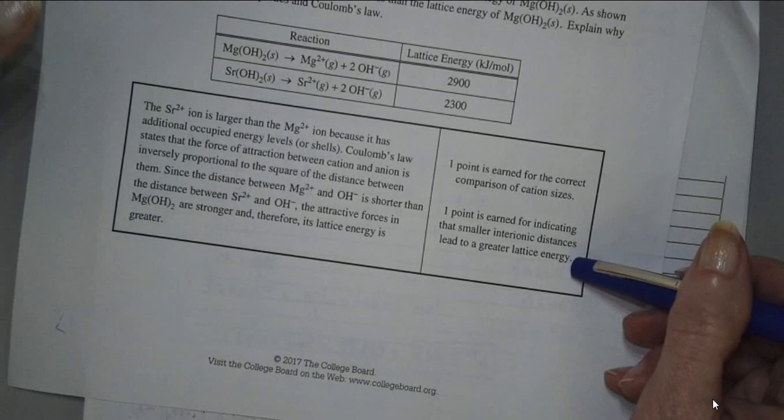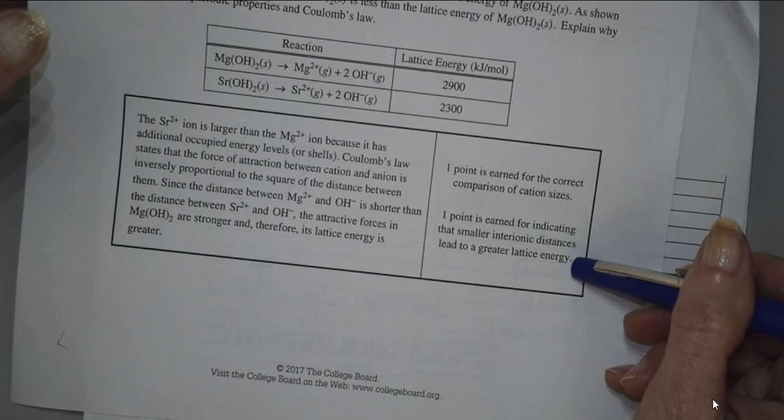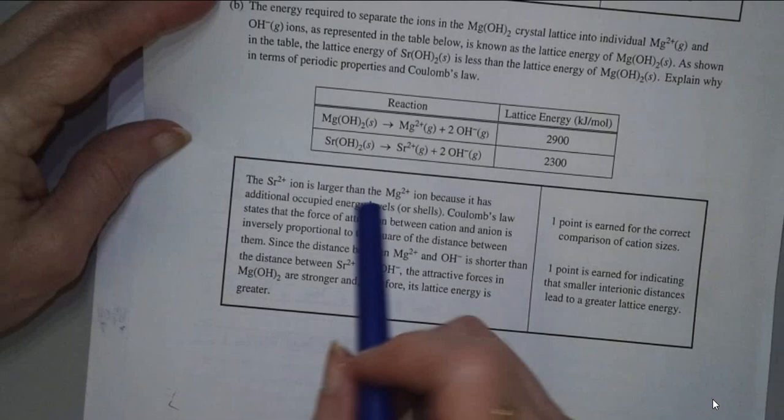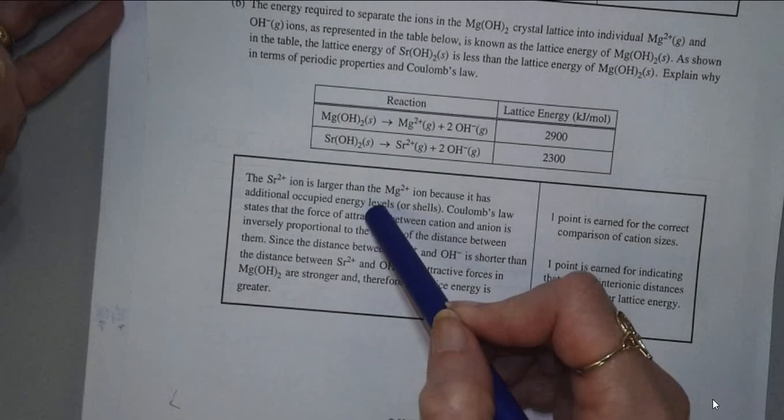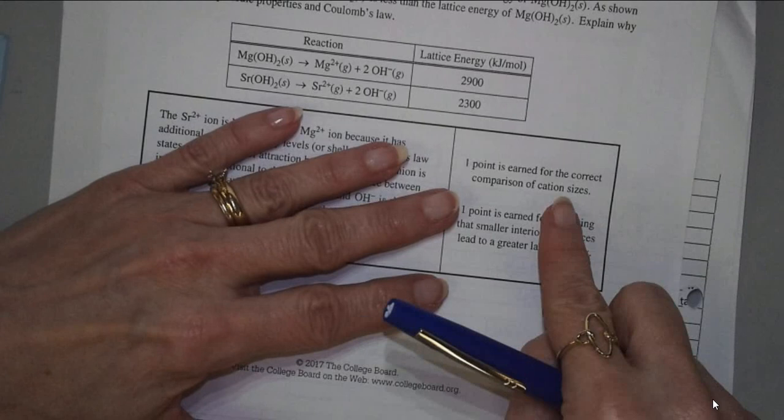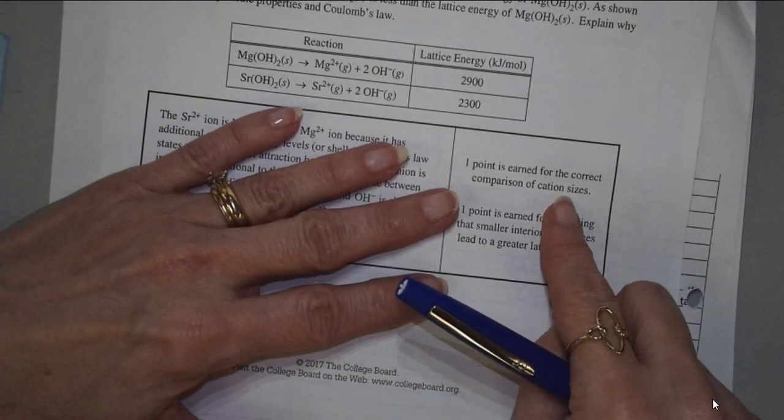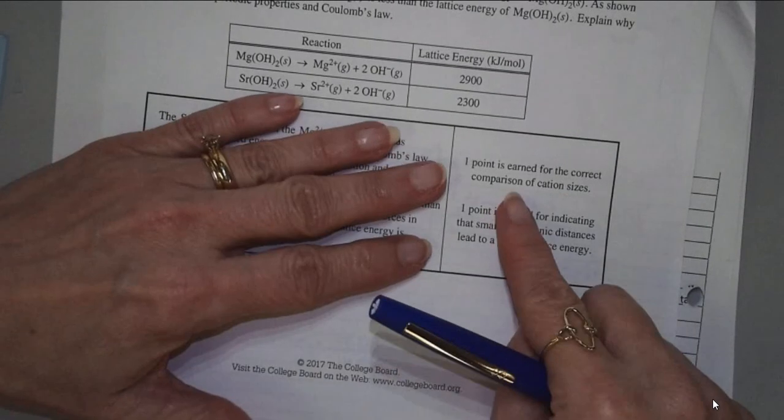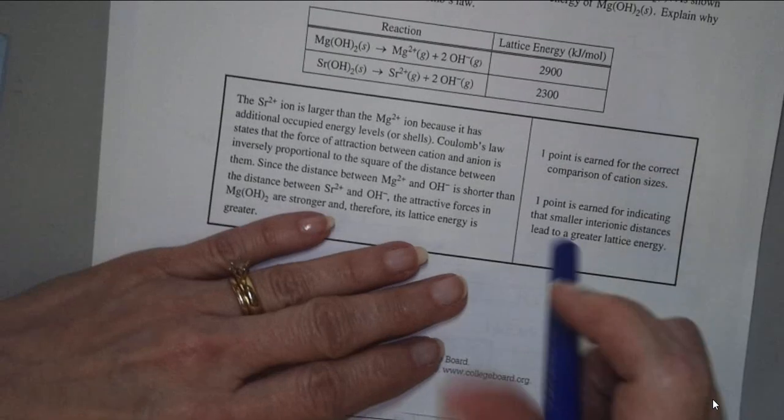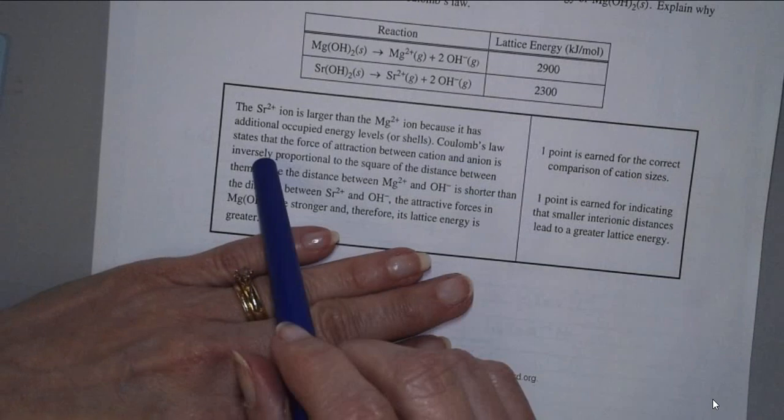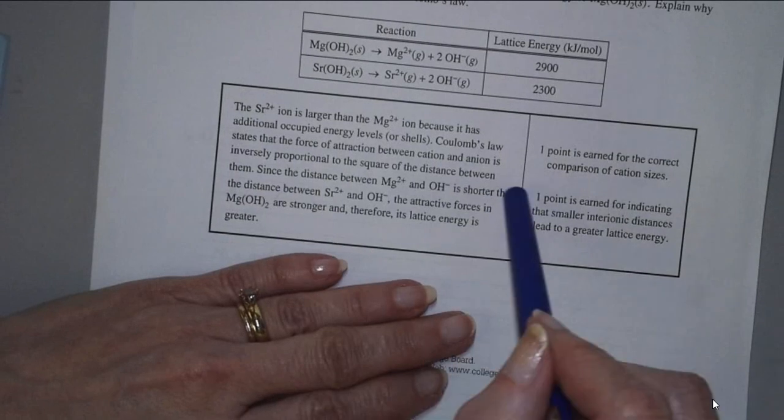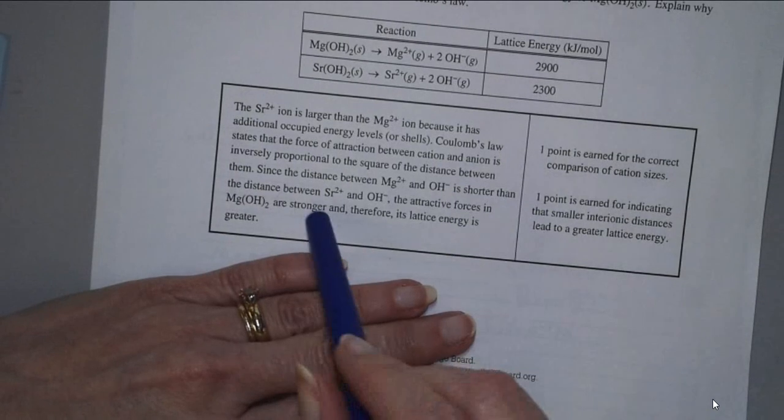Let's see what they said. The strontium ion is larger than the magnesium ion because it has additional occupied energy levels. But, if you look at this, one point is earned for the correct comparison of cation sizes. They didn't have to explain that. They're looking just for the fact that you said strontium is bigger than magnesium. Coulomb's law states that the force of attraction between cation and anion is inversely proportional to the square of the distance between them, so the distance there. Since the distance is shorter in the magnesium hydroxide as compared to strontium hydroxide, the attractive forces are there.